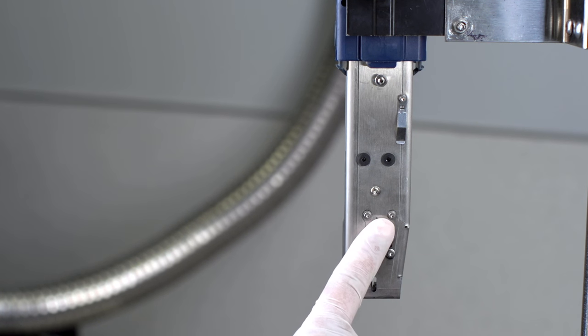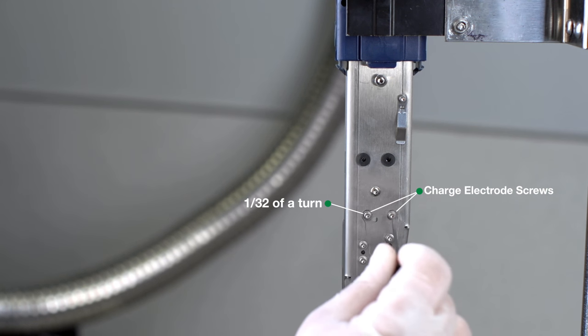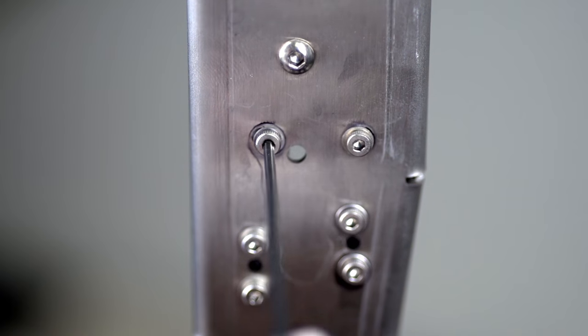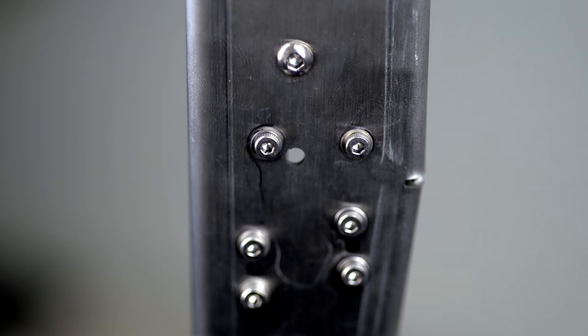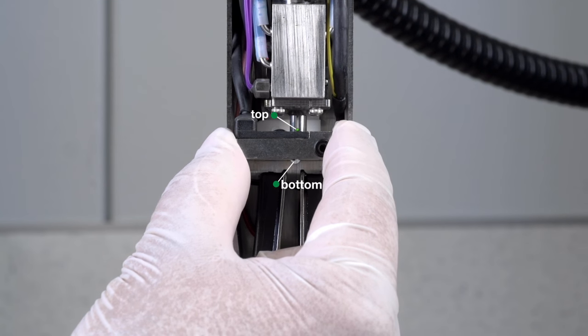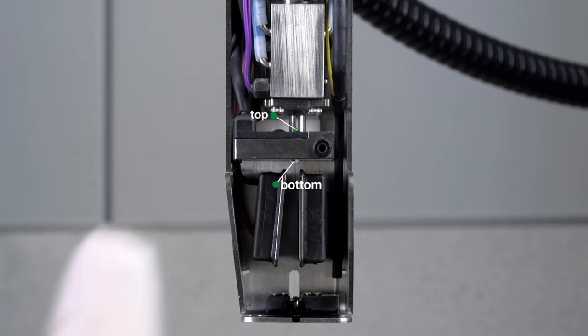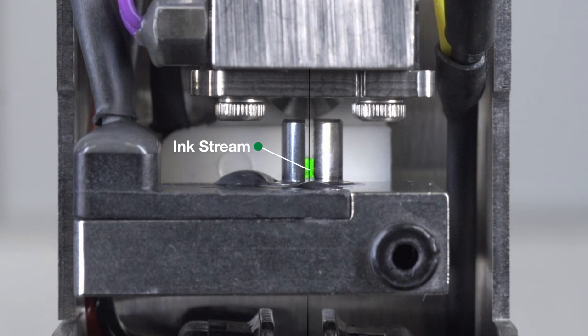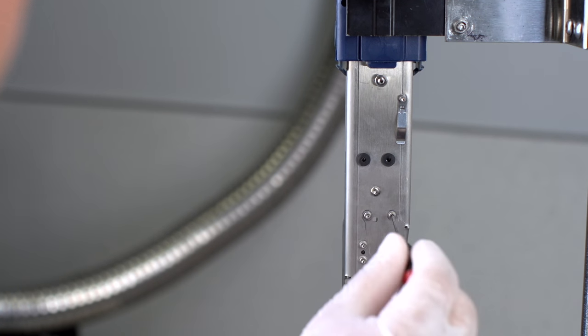Next, loosen the two charge electrode screws located on the back of the unit by turning them 1/32nd of a turn. These screws need to be loose enough to allow for adjustment, yet tight enough to hold the charge electrode in place. Using your fingers, gently adjust the charge electrode so that the ink stream flow is in the middle center of the charge electrode both on top and bottom as shown. Once complete, lock the charge electrode screws in place.